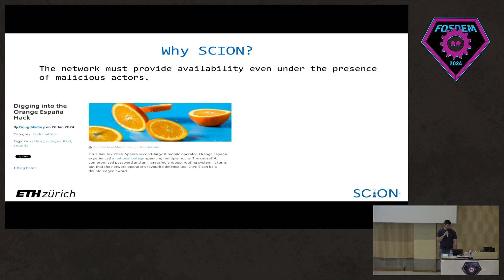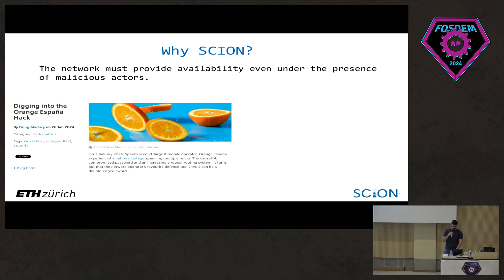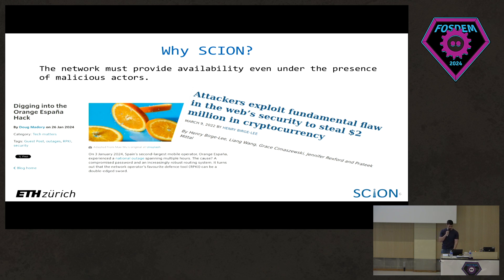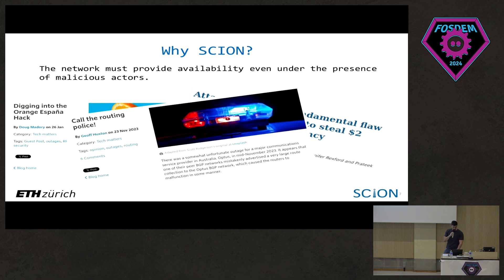We can find recent examples — for instance, an outage caused to a Spanish ISP due to a BGP attack. There are several malicious actors on the internet, from nation-state actors to cyber criminal groups, interested in causing harm for different reasons — from political to economic incentives. Sometimes the trust nature of the current routing architecture doesn't make it clear enough where the trust boundaries are.